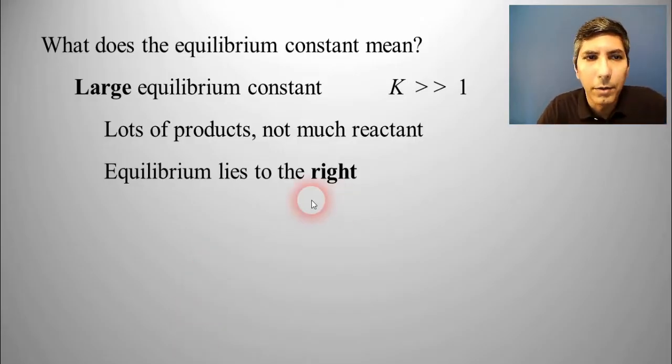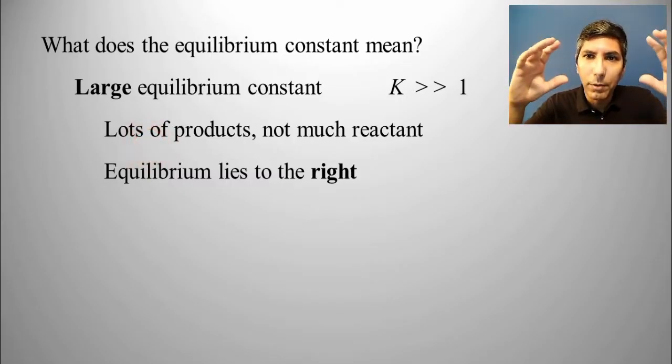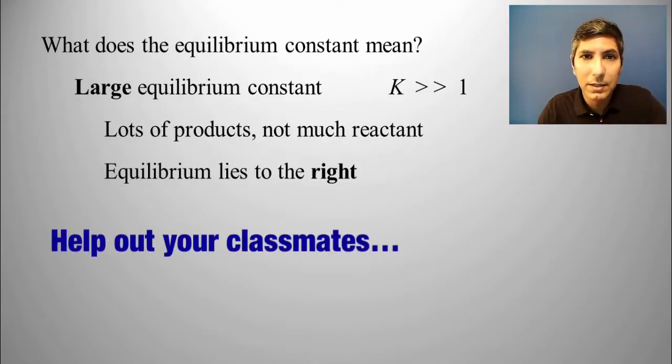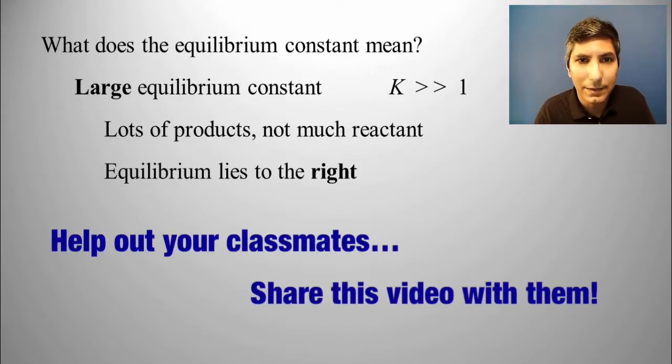Well, if you have a very large number, that means that we have a relatively large number in the numerator, because products are written on top and a relatively smaller number in the denominator, because reactants are written on the bottom. So that means we have a lot of product and not much reactant.